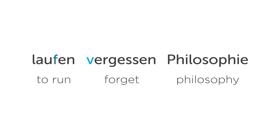The letters V, F, and P-H are all pronounced as an F sound in German. For example: Laufen, Vergessen, Philosophie. Even though they're spelled differently, they're all pronounced with the same F sound.